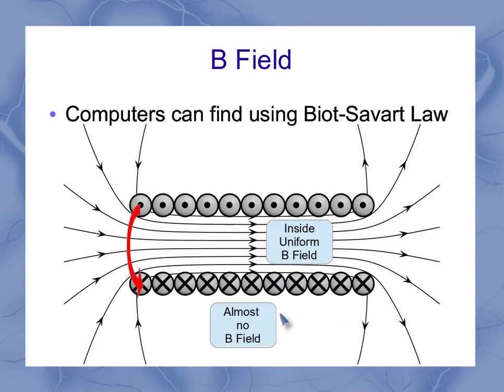Outside the solenoid, there's almost no B field. I say almost because there's a very weak one out here.